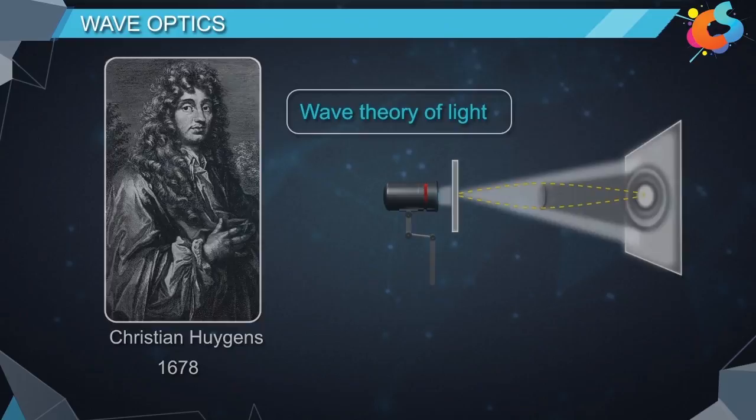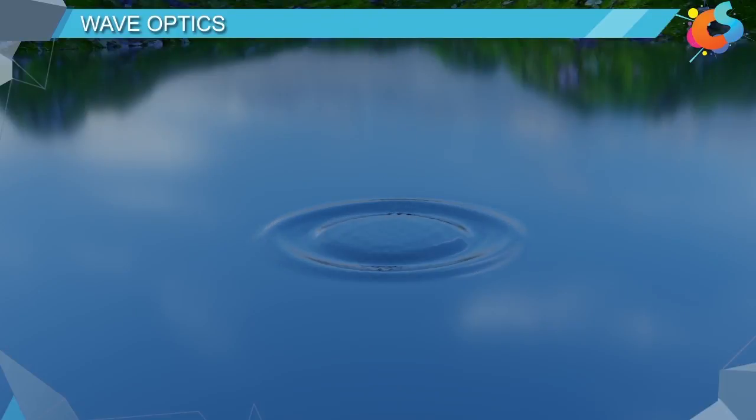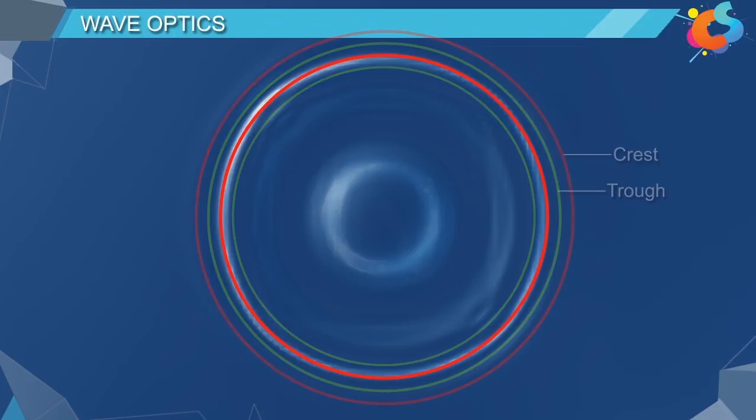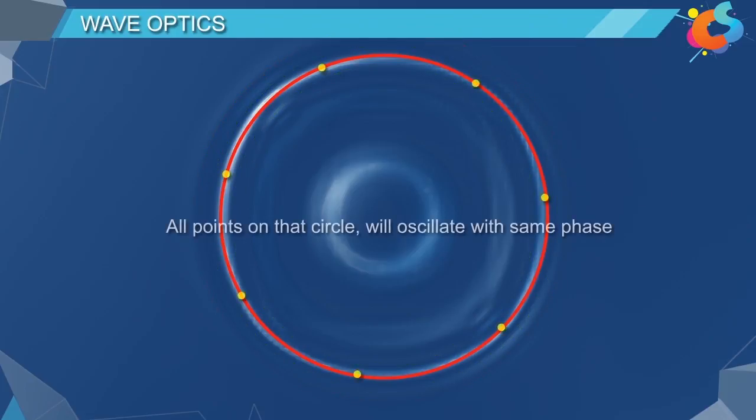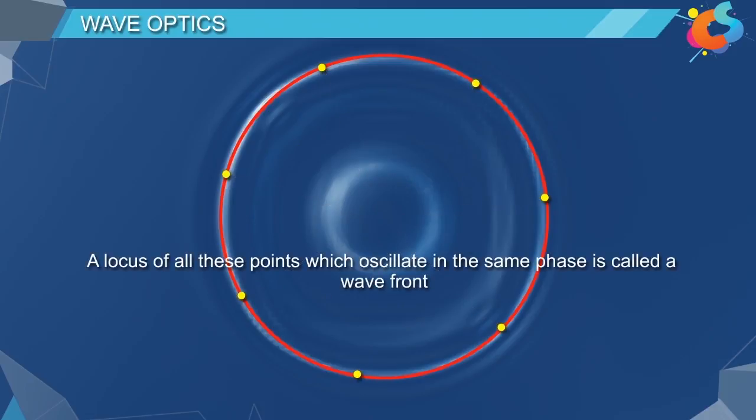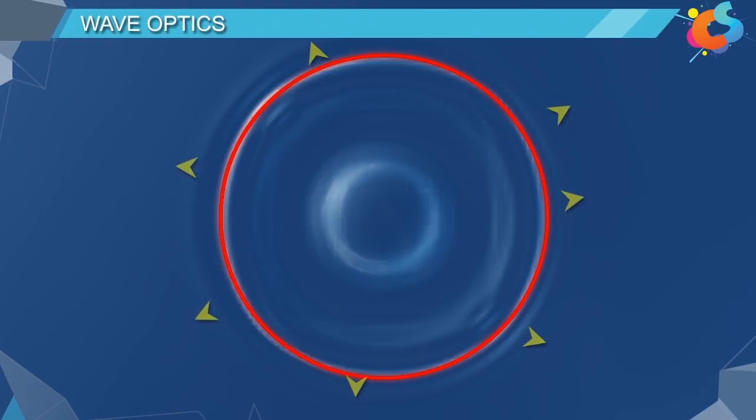When a stone is dropped into stagnant water of a pond, waves spread out from the point of impact in concentric circles. Every concentric circle is associated with either a crest or a trough. If we consider any concentric circle, all points on the circle will oscillate with the same phase because they are at the same distance from the point of impact. A locus of all these points which oscillate in the same phase is called a wave front. The speed at which the wave front moves outwards is called speed of the wave.